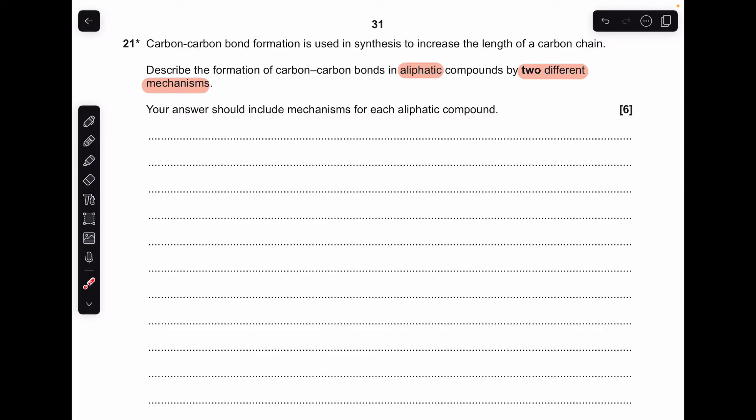Okay, so let's make a start. We've got to describe two different mechanisms for carbon-carbon bond formation in aliphatic compounds. The first one we look at is the reaction of haloalkanes with either sodium cyanide or potassium cyanide in ethanol solvent, and that's by nucleophilic substitution.